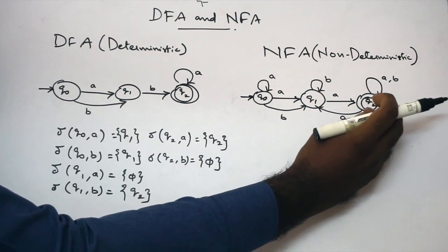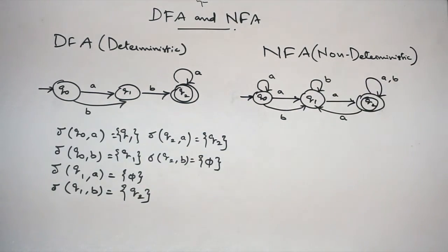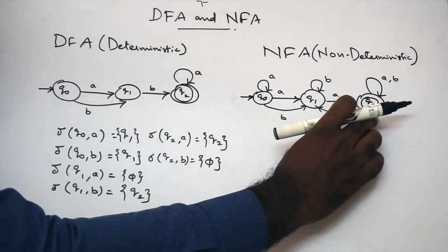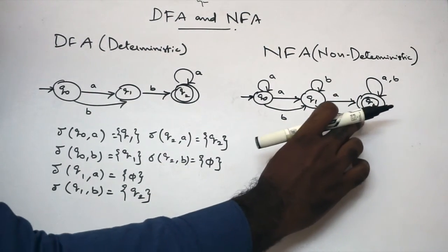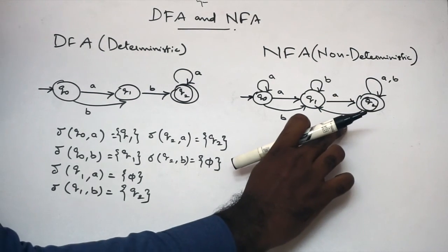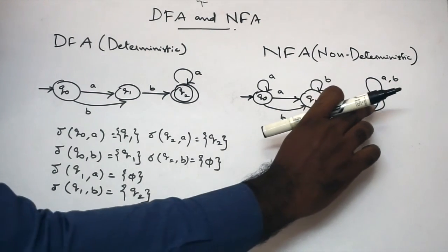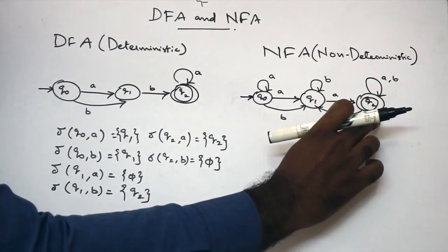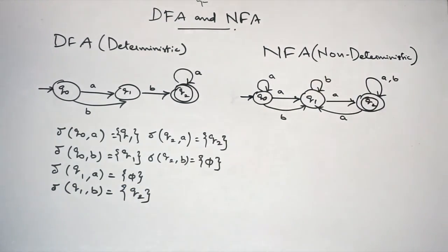So again, this is a non-deterministic nature — two different states. On state Q2, if you are giving input symbol A, the transition moves to Q1 and also to Q2. So more than one state — the transition moves.